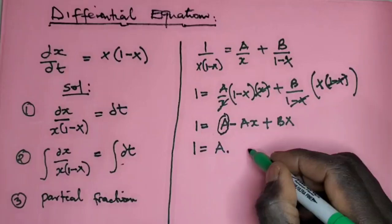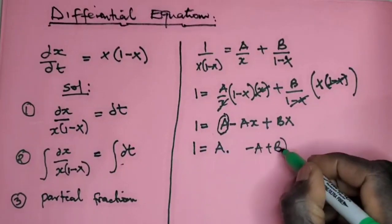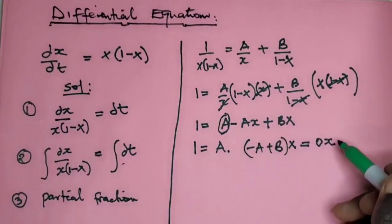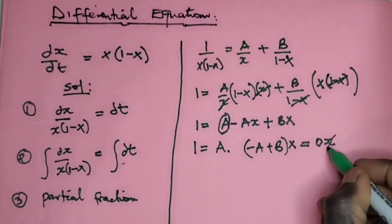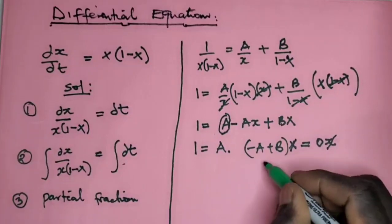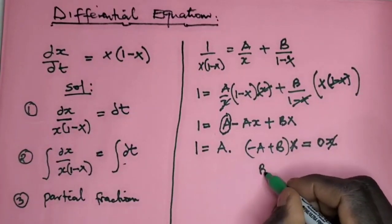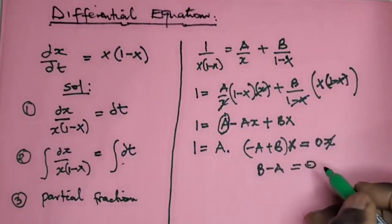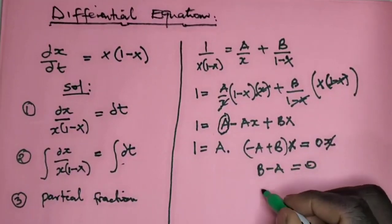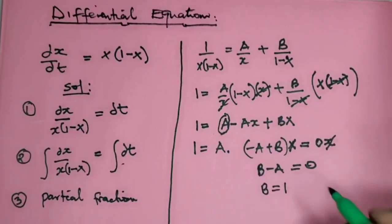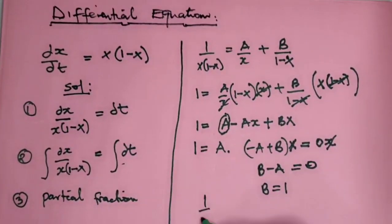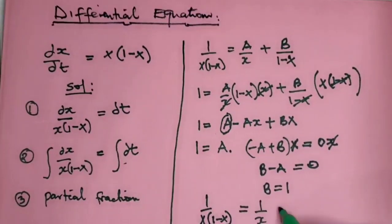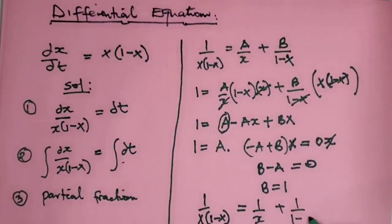Now we need to find the coefficient of x. So -A + B times x = 0x, which is the same as 0. So x and x cancel out, so this one is going to be B - A, or -A + B = 0. But we already know A = 1, so B will also be 1. So we can see that 1 over x(1-x) = 1/x + 1/(1-x).